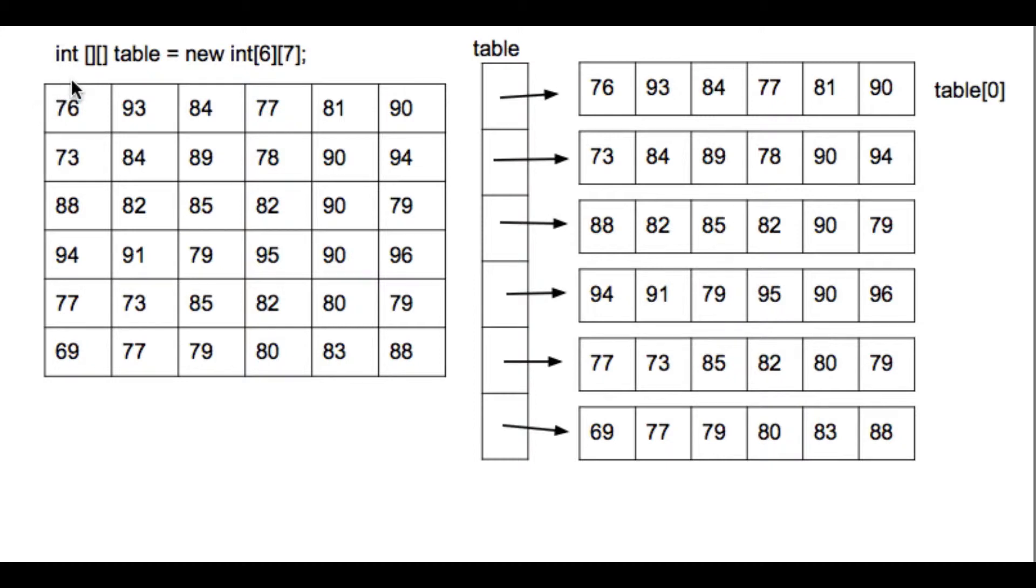And the columns are tests. So this is test zero. Those are the scores for test zero. These are the scores for test one, et cetera. So rows are students, rows represent students, and columns represent tests.